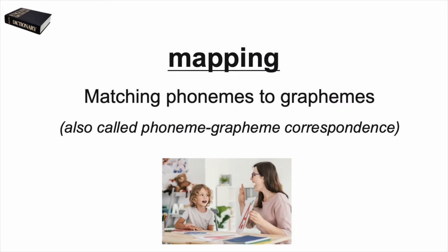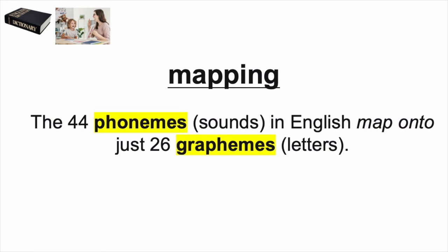Mapping is the ability to accurately match phonemes to graphemes. This skill is also called phoneme-grapheme correspondence. The reason that graphemes are so important in the alphabetic principle is the concept of mapping. The 44 phonemes or sounds in English map onto the 26 graphemes or letters or combinations of letters in the English alphabet.